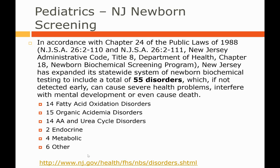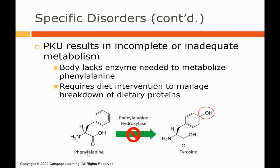In New Jersey we screen for a total of 55 disorders at birth, which is more advanced than other states. If these disorders are not detected early, they can cause severe health problems including mental retardation or even death. PKU — phenylketonuria — is one to be familiar with: the body lacks the enzyme needed to metabolize the amino acid phenylalanine to tyrosine, making phenylalanine essentially toxic to the body because it can't break it down, so we remove phenylalanine from the diet.